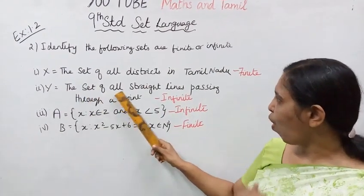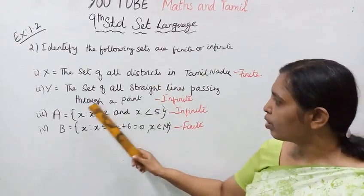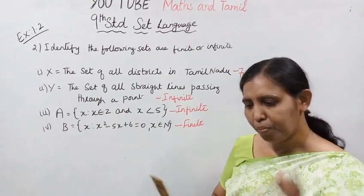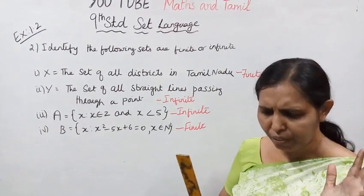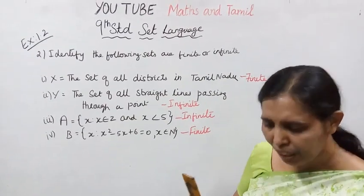The set of all straight lines passing through a point. The number of lines is infinite.